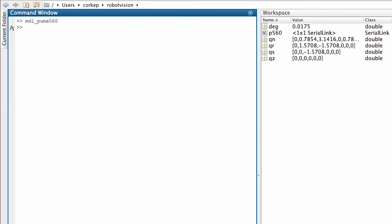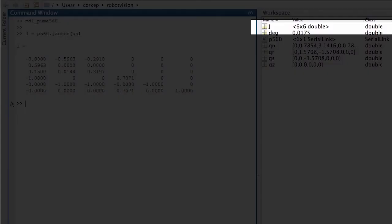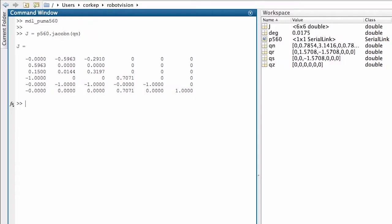Now we're going to compute the exact Jacobian for the Puma 560 robot and I've already loaded a model of the robot into my workspace. I'm going to put the Jacobian into the workspace variable J and my robot object is called P560 and the method that I'm going to invoke is called Jacobian and the only argument that I'm passing is the set of joint angles. Here is the Jacobian matrix and it's been computed for the set of joint angles Qn.